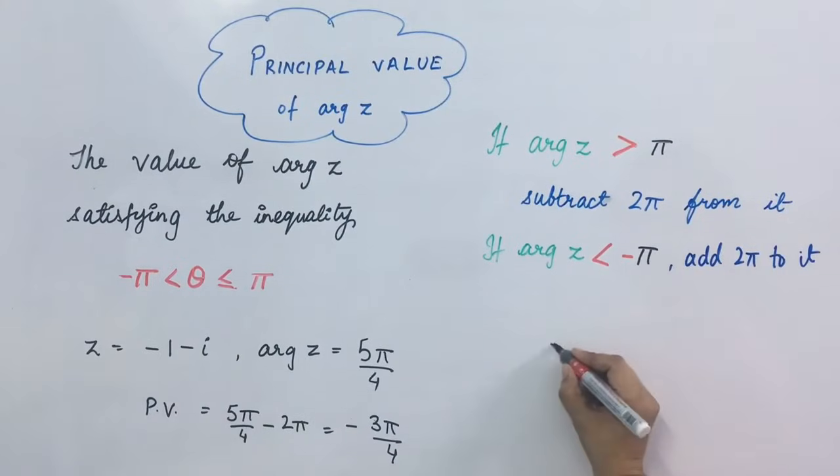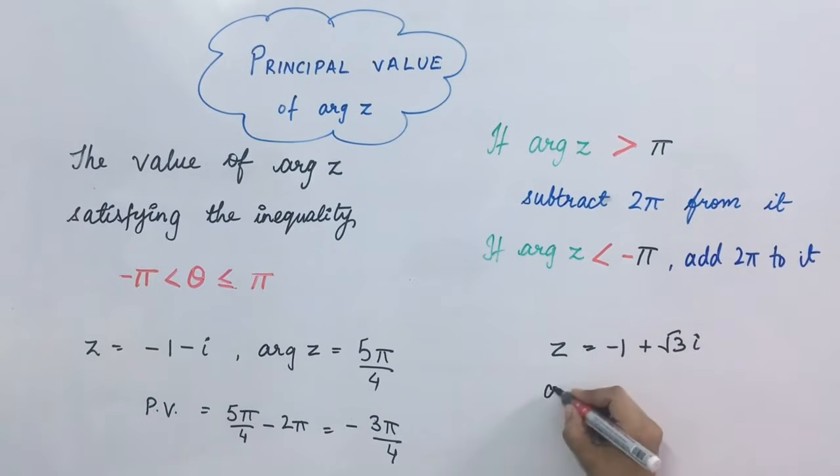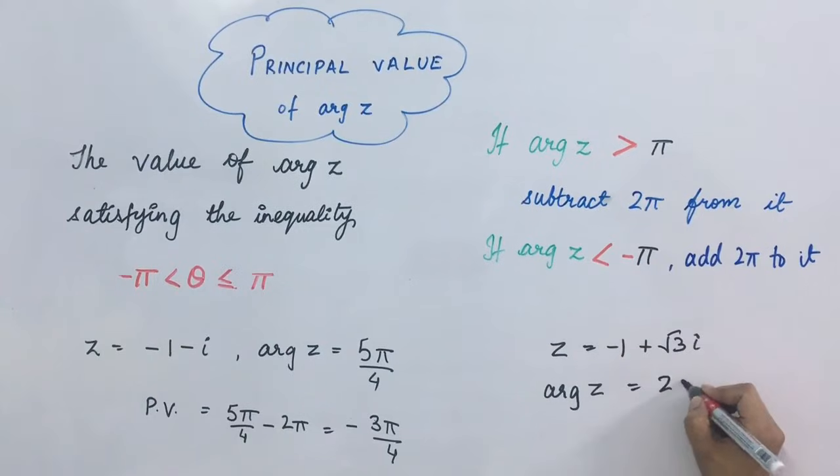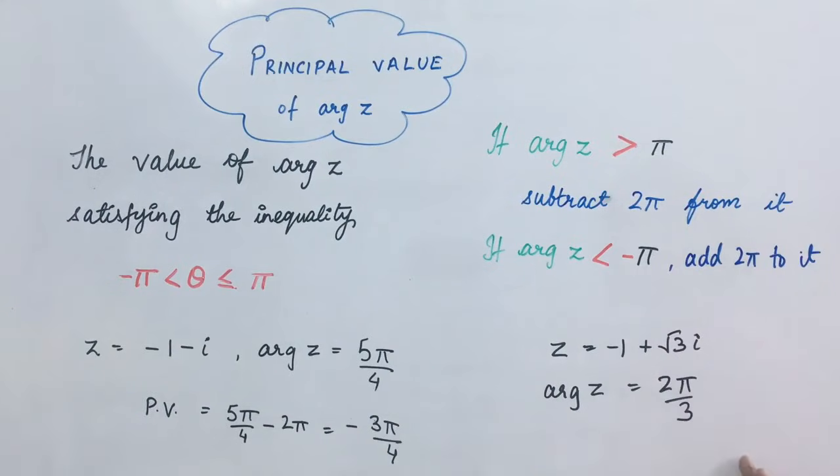Another case was z equal to minus 1 plus root 3i. In this case, the value for argument z was 2 pi upon 3. Now this value, it is less than pi and greater than minus pi. So, it is lying within this range of minus pi to plus pi. Therefore, this value itself will be the principal value of argument z.